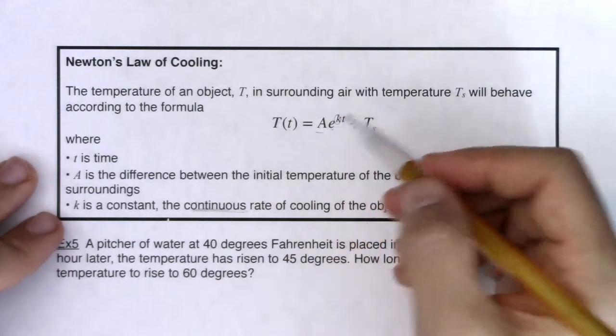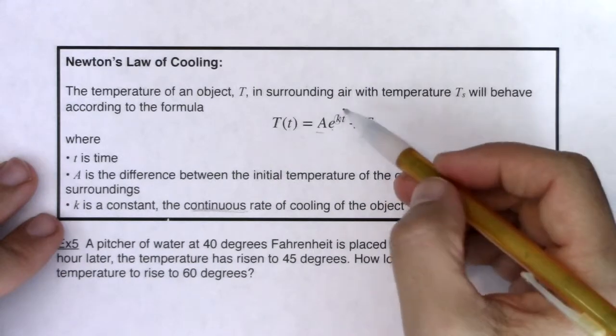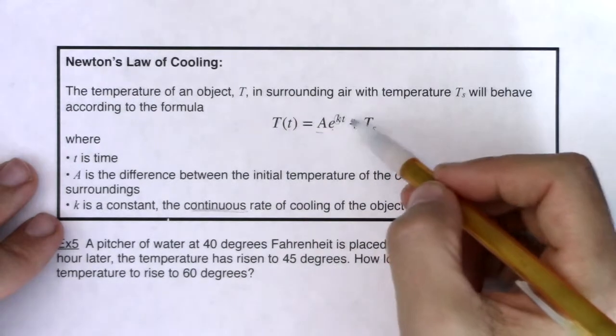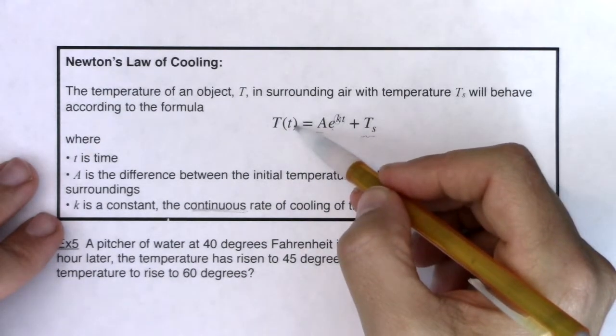K is a constant and A is a constant and so is E for that matter, right? E, base E, it's just a number 2.71828. So really your only variables here are little t and capital T, so time and temperature.